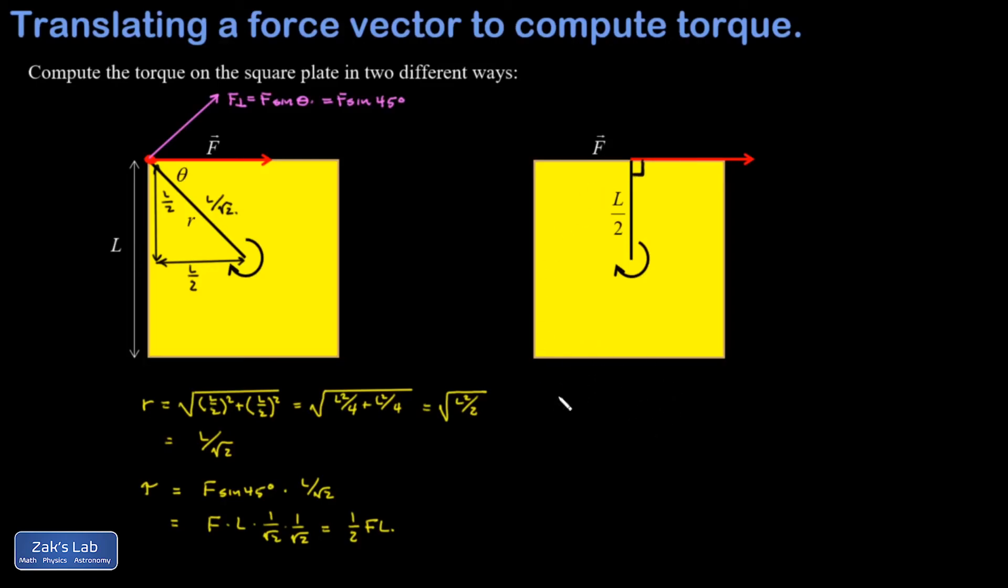Now that my force is perpendicular to this lever arm and this lever arm's length is so easy to measure—it's just L over 2—I write down the torque. It's equal to F times L over 2, in other words, one half FL.